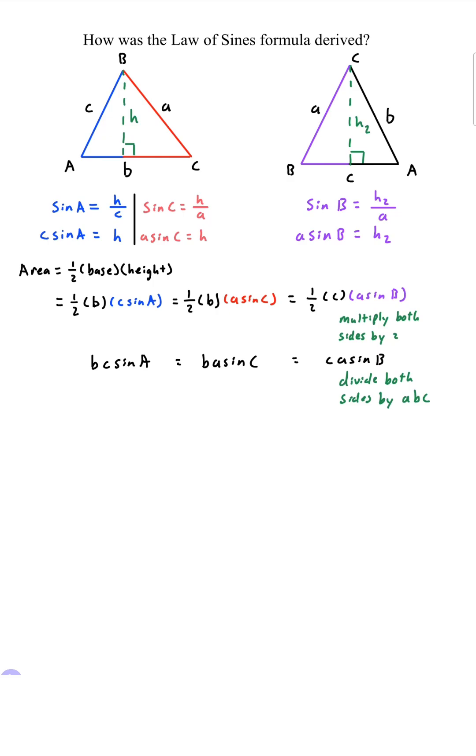So bc sine of A divided by abc gives you sine of A over a. ba sine of C divided by abc gives you sine of C over c and ca sine of B divided by abc gives you sine of B over b. With some rearrangement we get the law of sines sine of A over a equals sine of B over b equals sine of C over c.